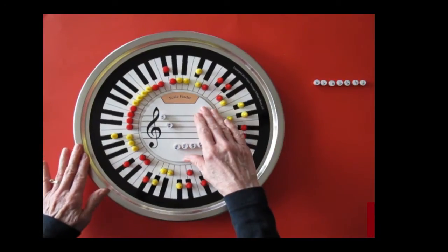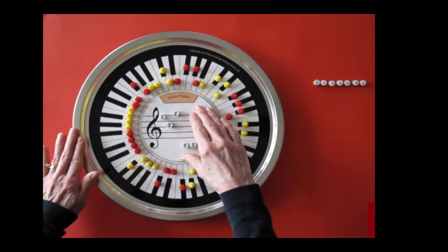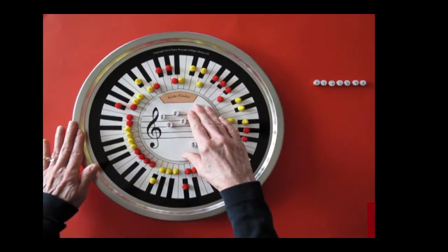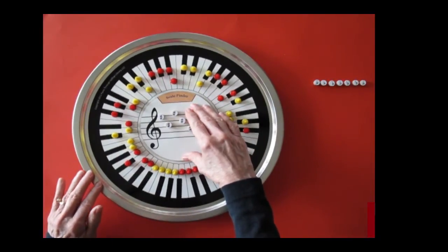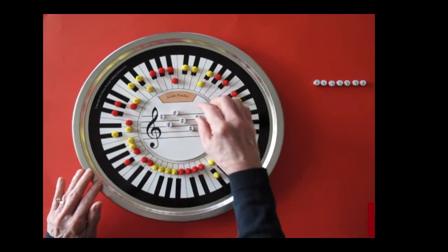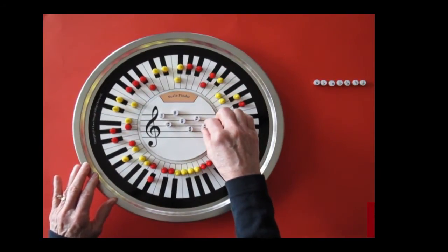The new sharp continues to be the seventh step of the scale. For A major, G sharp. For E major, D sharp. For B major, A sharp. For F sharp major, the white key, E sharp. And for C sharp major, the white key sharp, B sharp.